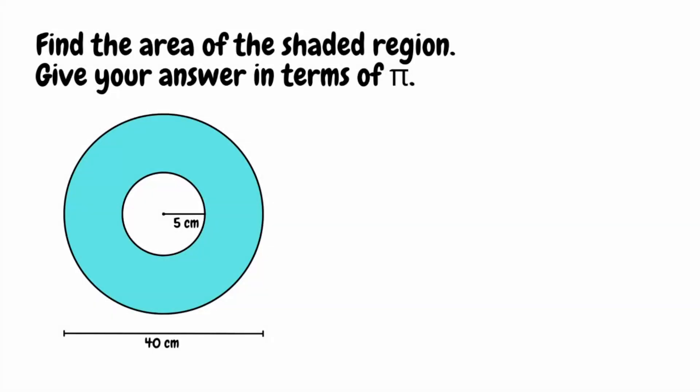In today's video we're going to be taking a look at finding the area of compound shapes, but specifically examples where we've got circles involved. For this first question we want to find the area of the shaded region and give our answer in terms of pi. We can see here we've essentially got a large circle with a smaller circle cut out of the middle.